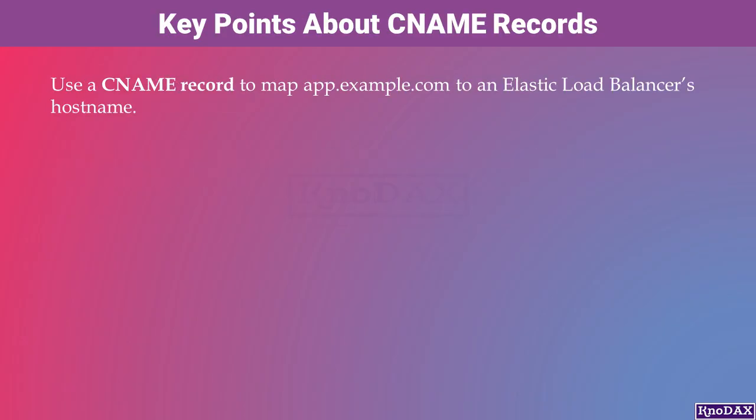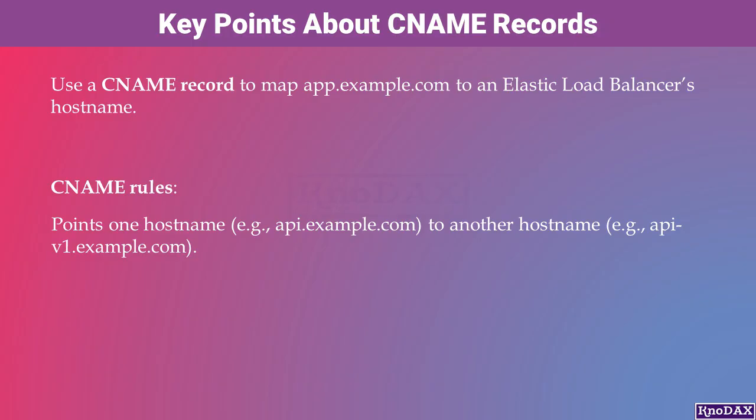Let's explore how CNAME records work in Route 53. You can set up a CNAME record in your hosted zone to map a domain name, like app.example.com, to an elastic load balancer's hostname. This allows users to access the load balancer through a custom, user-friendly domain. CNAME records always point one hostname to another — for example, you can map api.example.com to api-v1.example.com.